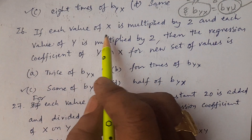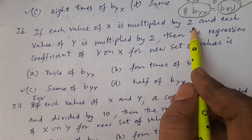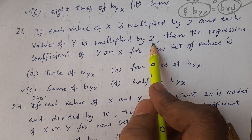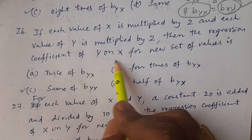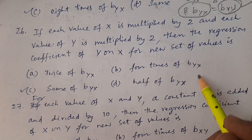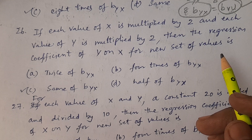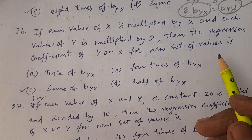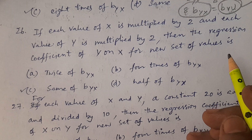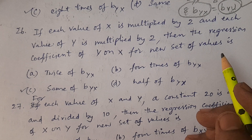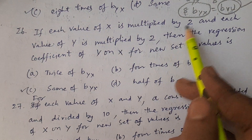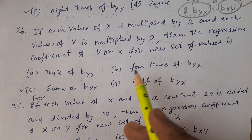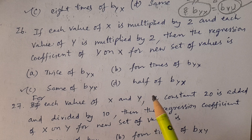If each value of x is multiplied by 2 and each value of y is multiplied by 2, then the regression coefficient of y on x for the new set of values is — for which you need not do any kind of exercise, because same values, therefore no change.